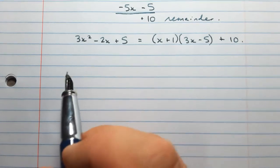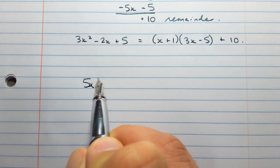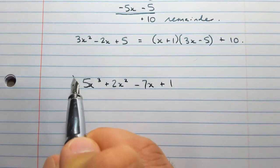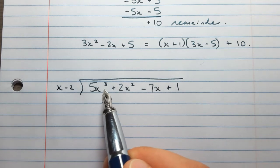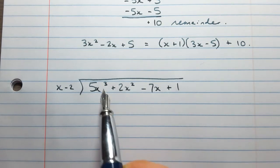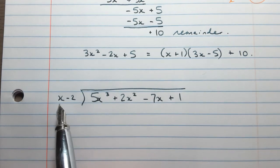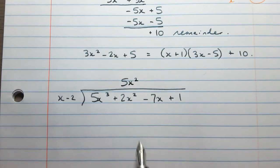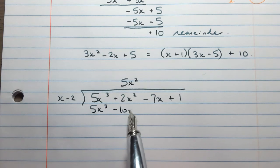Let's write our statement. We can now say that 3x squared minus 2x plus 5 is equal to x plus 1 times 3x minus 5 plus a remainder of 10. Let's try another example. How about 5x cubed plus 2x squared minus 7x plus 1, and we'll divide that by x minus 2. This is a cubic instead of a quadratic, but everything's still the same. I've got degree 3, degree 2, degree 1, degree 0, so the terms are in order.